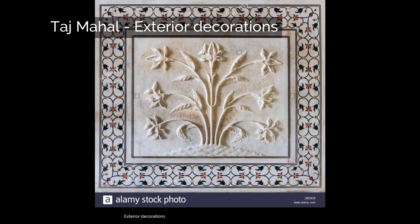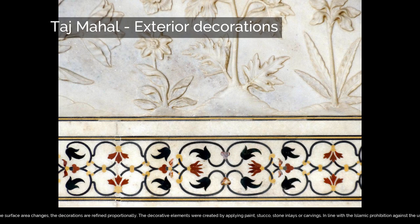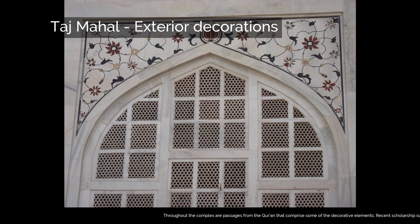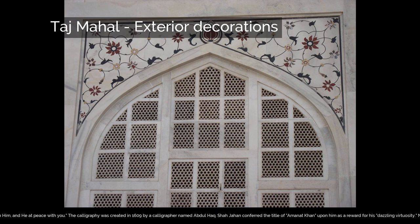The exterior decorations of the Taj Mahal are among the finest in Mughal architecture. As the surface area changes, the decorations are refined proportionally. Decorative elements were created by applying paint, stucco, stone inlays, or carvings. In line with the Islamic prohibition against the use of anthropomorphic forms, the decorative elements can be grouped into calligraphy, abstract forms, or vegetative motifs. Throughout the complex are passages from the Quran. Recent scholarship suggests that Amanat Khan chose the passages. The calligraphy on the great gate reads: "O soul, thou art at rest. Return to the Lord at peace with him, and he at peace with you." The calligraphy was created in 1609 by a calligrapher named Abdul Haq, upon whom Shah Jahan conferred the title of Amanat Khan as a reward for his dazzling virtuosity. Near the lines from the Quran at the base of the interior dome is the inscription: "Written by the insignificant being, Amanat Khan Shirazi."